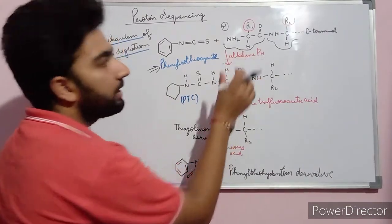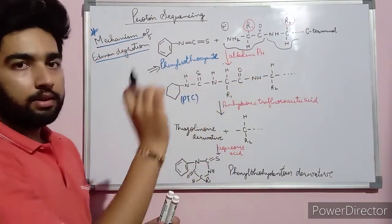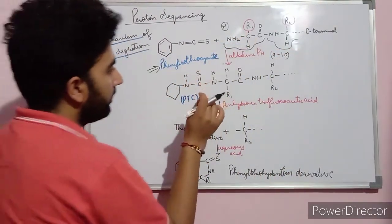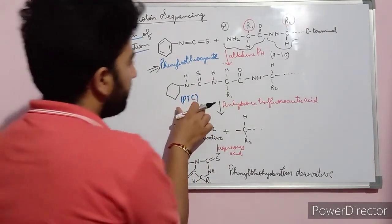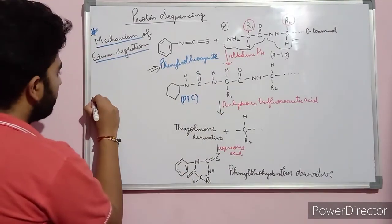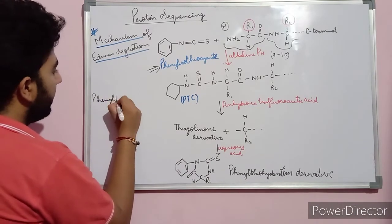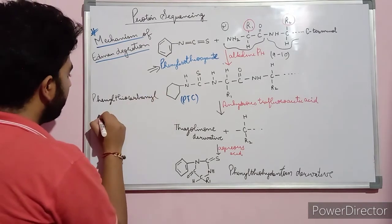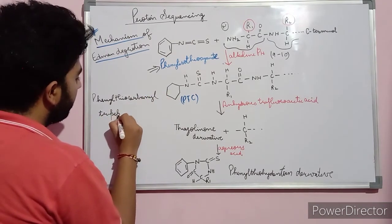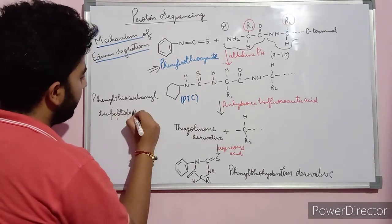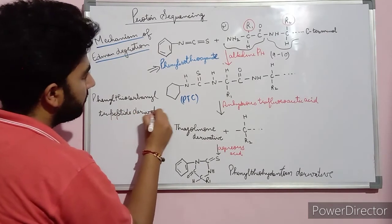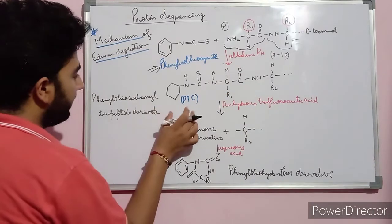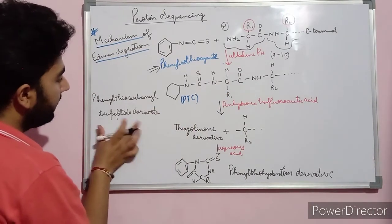This phenyl isothiocyanate reacts with this polypeptide sequence at the N-terminal. This reaction takes place in alkaline pH, likewise 9 to 10 pH. During this reaction, the intermediate form is PTC, which is also known as phenyl thiocarbamoyl peptide derivative. Phenyl isothiocyanate reacts with this polypeptide sequence and forms a PTC — phenyl thiocarbamoyl peptide derivative.